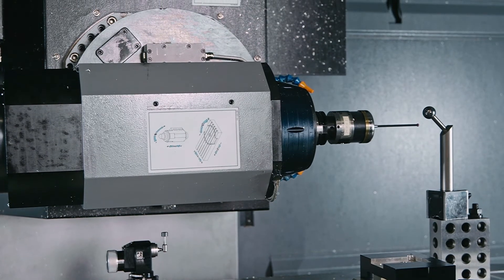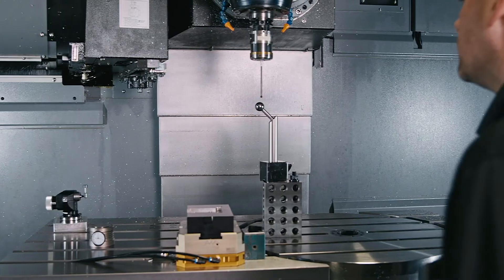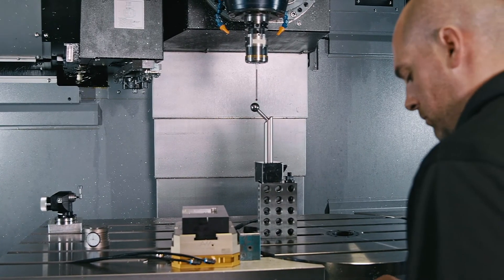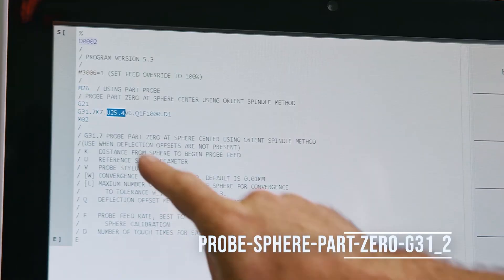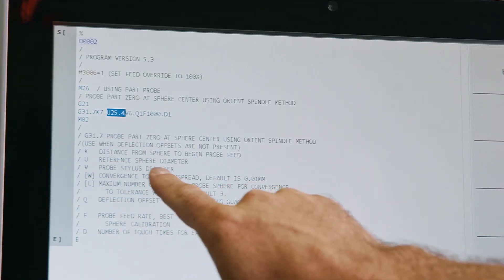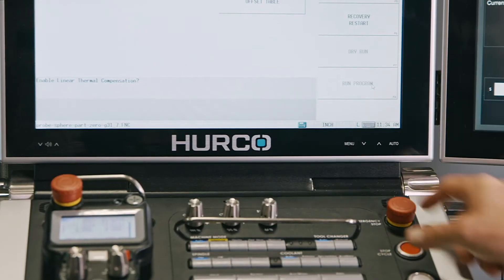Be sure to check for clearance at 90 degrees before running the program. Jog to a quarter inch and load program probe sphere part 0 G31-2. Make sure the sphere size in the program matches the one you're using and you're ready to run.